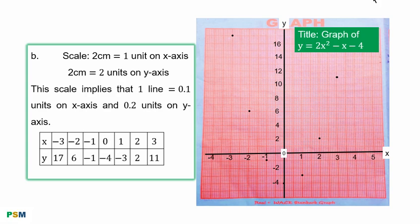Part B of the question, we are to plot the graph. This is the given scale. On the S axis, 2 cm to 1 unit. This graph I'm using, 1 box, that is 1 cm, contains 5 lines. So, to get 2 cm, you have to combine 2 boxes. From the origin to the end of the second box is 1. The next 2 boxes, 2. You have 3, and so on.